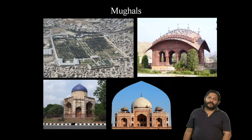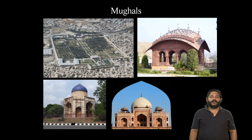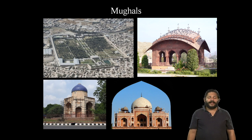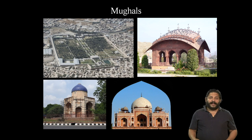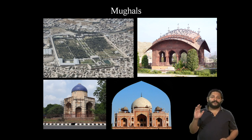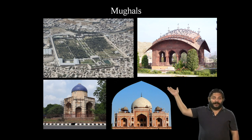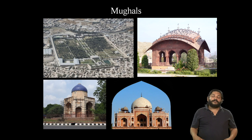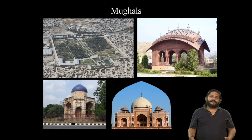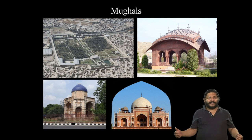We started off the week with looking at the Mughals — who they were, where they came from, what their sources of inspiration were, and how their architecture evolved through 200 years of being in India and being Indian. The Mughals, when they first arrived, as we saw with the Bagh-e-Babur, were heavily influenced by their Central Asian roots, choosing to lay out extensive gardens.